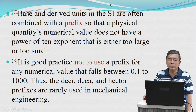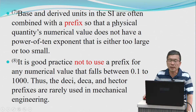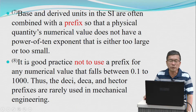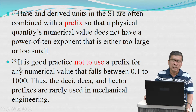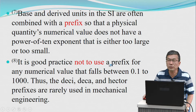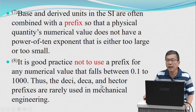Base and derived units in the SI are often combined with a prefix so that a physical quantity's numerical value does not have a power of 10 exponent that is either too large or too small. It is good practice not to use a prefix for any numerical value that falls between 0.1 and 1,000. Thus, the deci, deca, and hecto prefixes are rarely used in mechanical engineering.